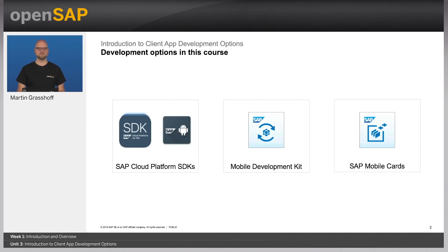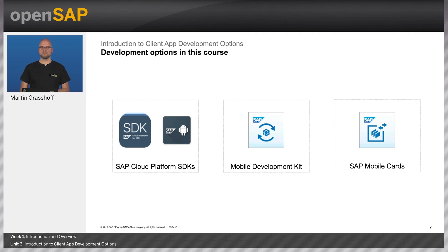With Mobile Services, we do support a variety of app development options. On the left-hand side, you see the SAP Cloud Platform SDKs, which provide native app development for your mobile solutions. Then we have the Mobile Development Kit. And on the right-hand side, you see the SAP Mobile Cards. In this unit, I will go through the details of all of these options.